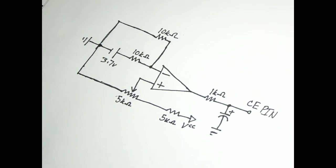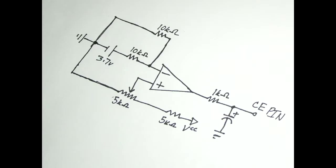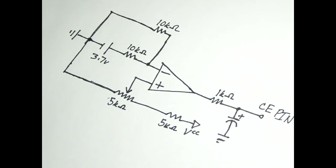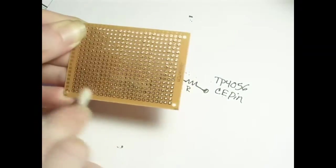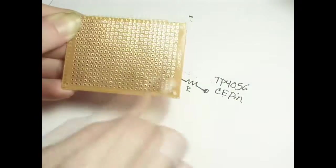I copied the schematic to paper and gathered the parts needed. You can find the parts list in the description as well as the schematic and the entire script for this video. I cleaned the board well with isopropyl alcohol to ensure good solder joints.